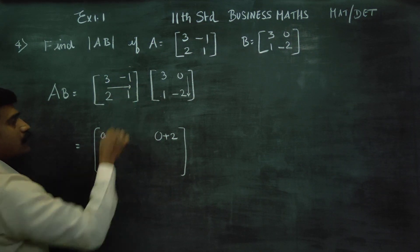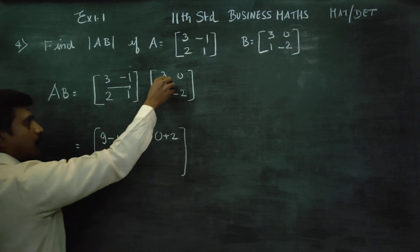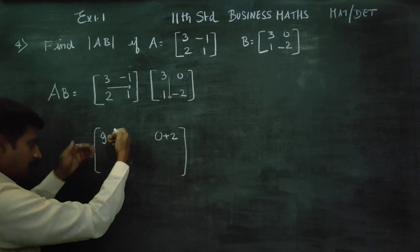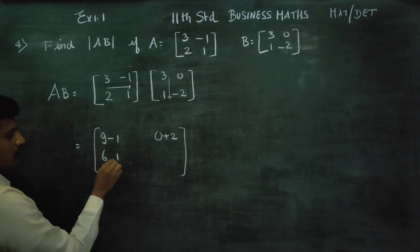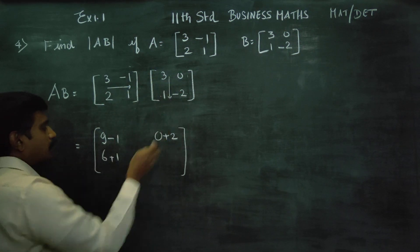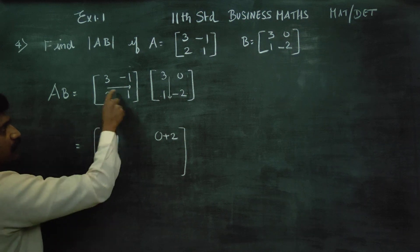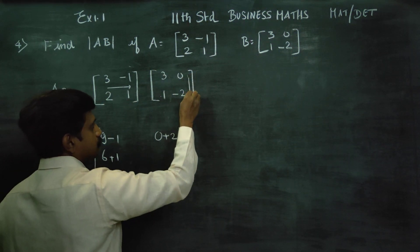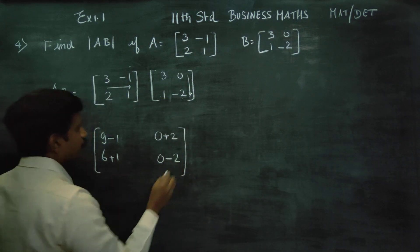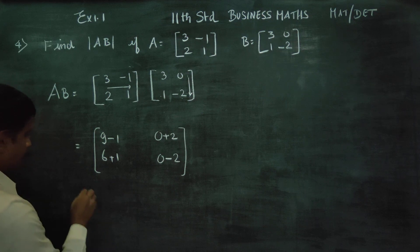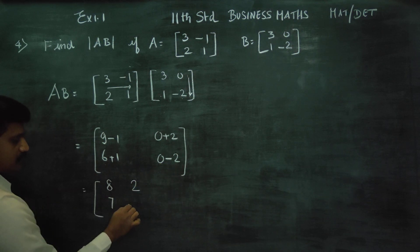Now row into column again. Second row: 3 twos are 6, 1 ones are 1, symbol is plus. Then: 1st number into 1st number — 3 twos are 6, 1 ones are 1. Row into column: full multiply — 2 fours are 8. So the results are: 0 plus 2 is 2, 6 plus 1 is 7, 0 to 2 is minus 2.